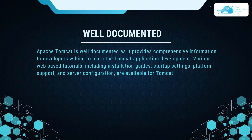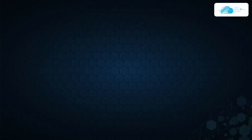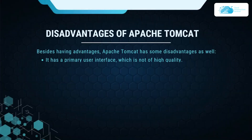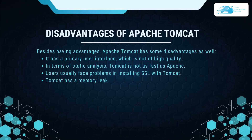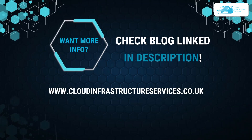Now since we have talked about the major advantages of Apache Tomcat, we should also discuss the major disadvantages. There are not a lot of disadvantages, but the first and foremost is that it has a primary user interface which is not of high quality. Other than that, in terms of static content, Tomcat is not as fast as Apache. Users also usually face problems in installing SSL with Tomcat. Additionally, some users have reported that Tomcat has a memory leak.